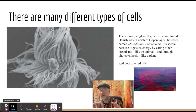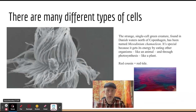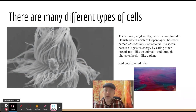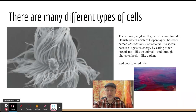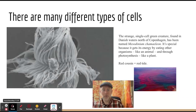We'd like to divide things into nice plant and animal situations. This lovely little fella is mesodymium chamomileon, which is a single-celled green creature that can either eat other cells — other animals — or it can produce its own photosynthesis and generate stuff as a plant. So it does both — it's both animal and plant.